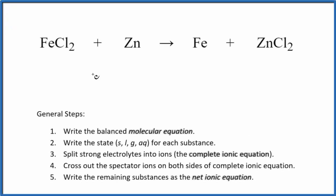In this video, we'll write the balanced net ionic equation for FeCl2 plus Zn. This is iron 2 chloride plus zinc. The first thing we need to do with net ionic equations is balance the molecular equation. This is our molecular equation. The good thing is this is already balanced, so we don't have to do much there.